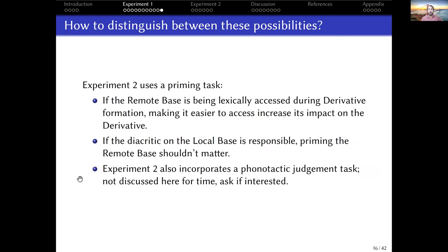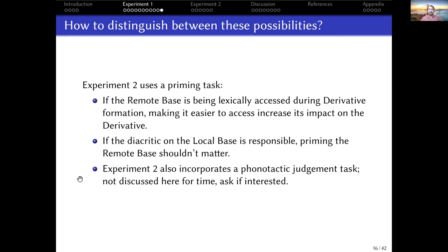We can distinguish between these two possibilities using a priming task. If the remote base is actually being lexically accessed during derivative formation, then doing something that increases its resting activation — like priming it — should have an impact on how it interacts with the derivative formation process. However, if it's simply a diacritic on the local base, then manipulating the remote base won't really do anything. Experiment two incorporates this priming manipulation. There are also slides in the appendix on how phonotactic and alternation markedness relate to this situation if you're curious.